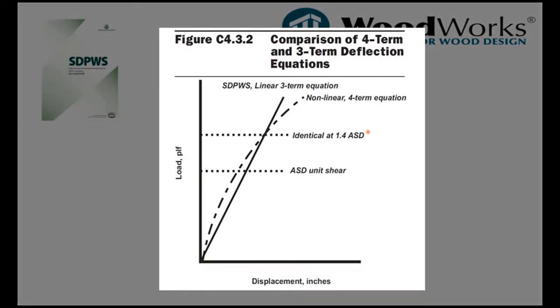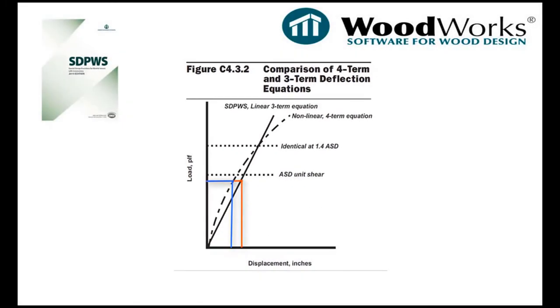Since deflections are designed using strength level load, which is approximately 1.4 ASD, the deflection following the three-term and four-term equations will be the same when calculated at 100% ASD capacity. It also shows that for forces lower than the design capacity, the three-term will approximate a higher deflection than the more accurate nonlinear calculation.